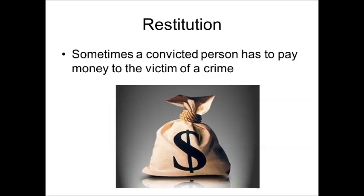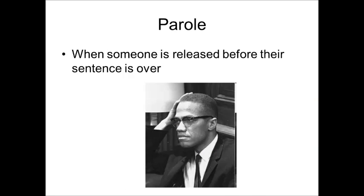Other words I want you to know are probation, restitution, and parole. Probation is a period of time when someone convicted of a crime gets monitored rather than sent to jail. Restitution is when a convicted person has to repay money for the crime they committed. And parole means that if you were convicted and sent to prison, you get released before your sentence is over, meaning your sentence is shortened.